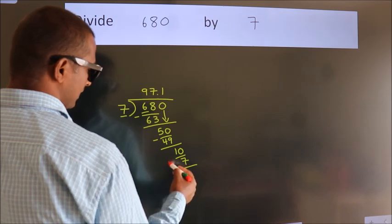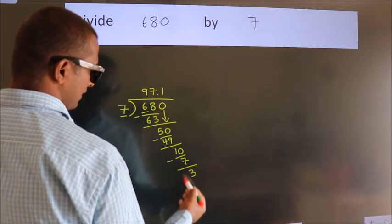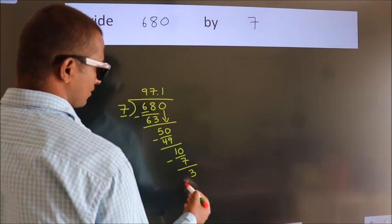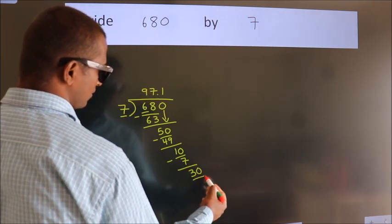Now we subtract, we get 3. After this, we already have the decimal. So directly take 0. So 30.